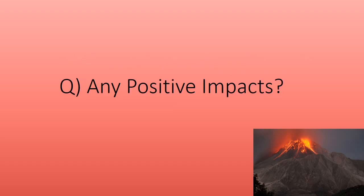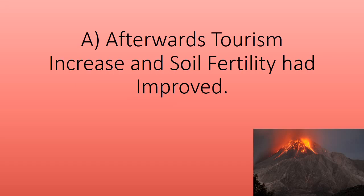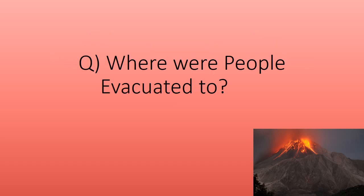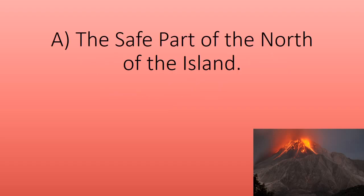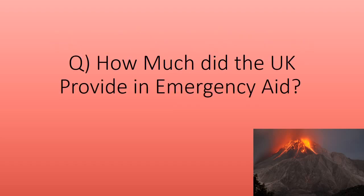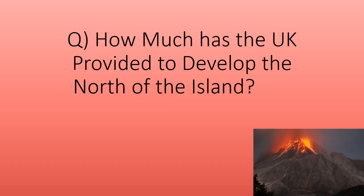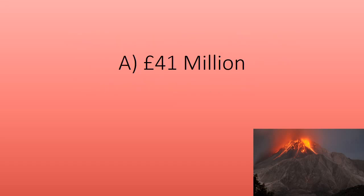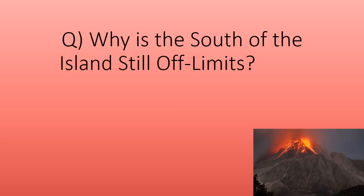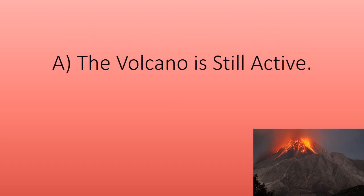Any positive impacts? Afterwards, tourism increased and soil fertility had improved. Where were people evacuated to? The safe part of the north of the island. The UK provided seventeen million pounds in emergency aid and forty-one million pounds to develop the north. Why is the south of the island still off-limits? The volcano is still active.